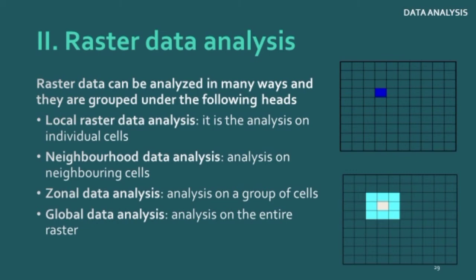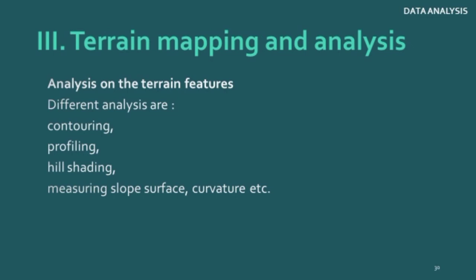Zonal data analysis is the analysis on a group of cells. Global data analysis is performed on the entire raster. Terrain mapping and analysis is the analysis on terrain features like contouring, profiling, hill shading, measuring slope, surface curvature, etc. Basically, topographic and geographic study is carried out with the help of terrain mapping and analysis.